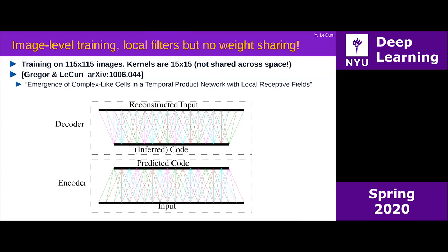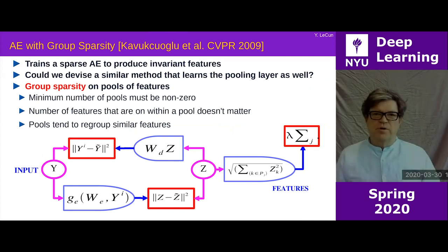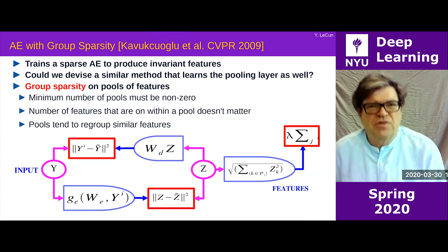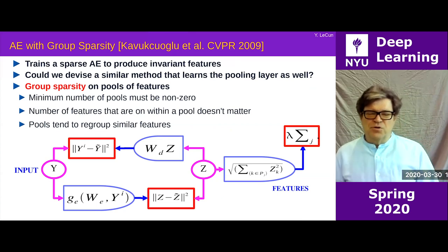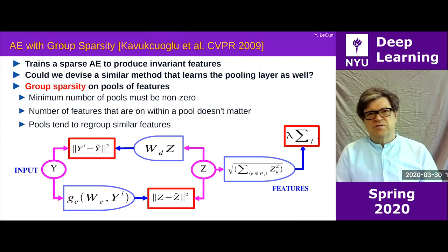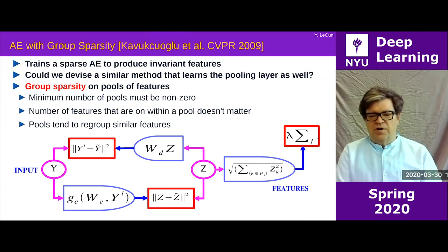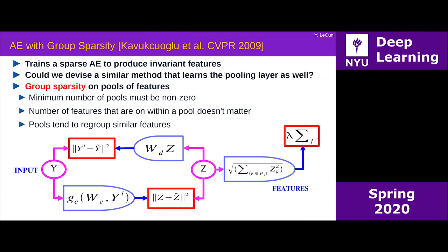Regarding the group sparsity notation: P_j is a group — like a pool. Imagine this is a pool like in a convolutional net, but the pool instead of pooling just over space, it pools over features as well. For a fully connected network, it just pools over components of Z. P_j is a subset of indices of components of Z.